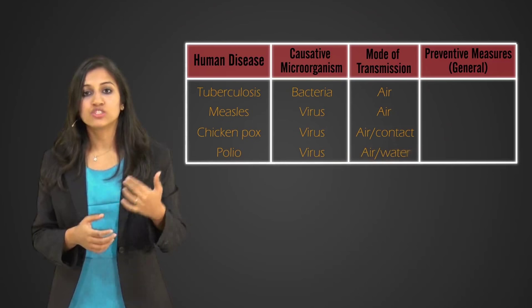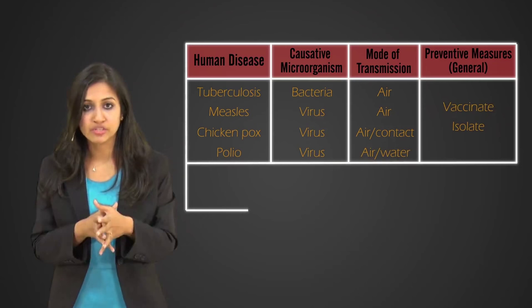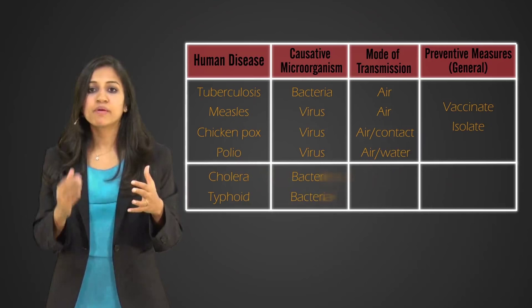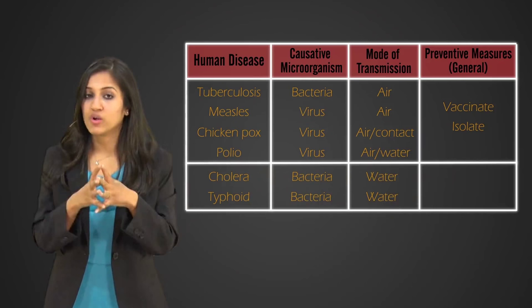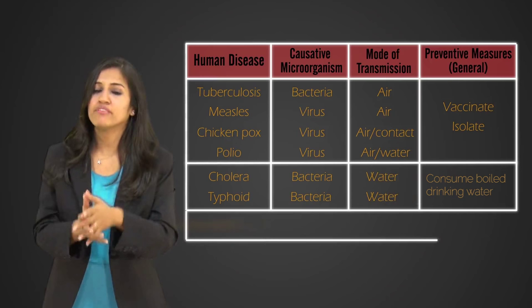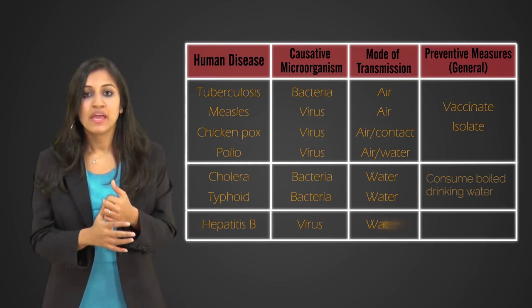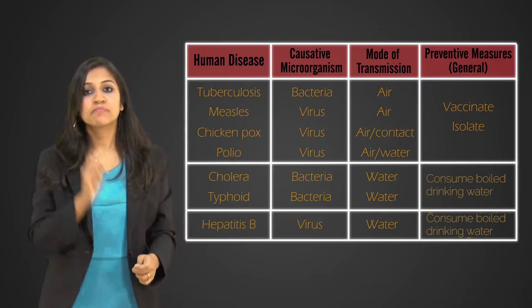So there are vaccines available for all of these, but then you need to keep the person who has it in isolation. And then you have cholera and typhoid, both which are caused by bacteria and they spread through the water. So for this you need to consume good drinking water and not allow water to accumulate around you. And then you have hepatitis B, which is again caused by a virus and spread through water.